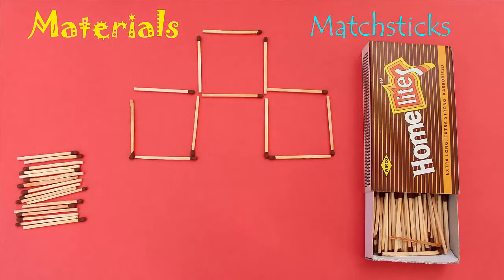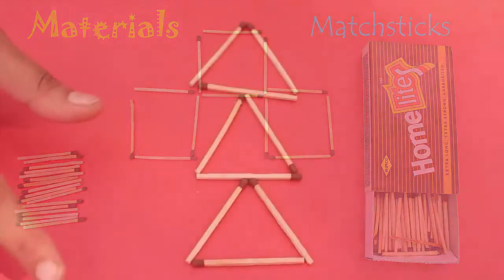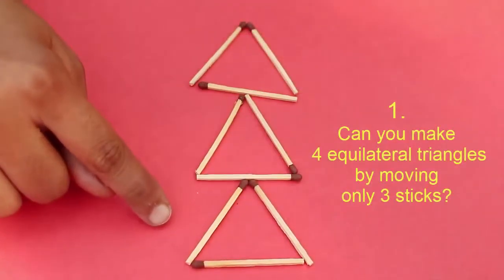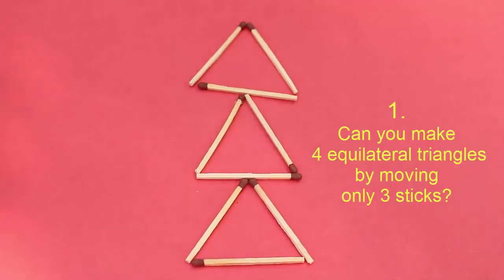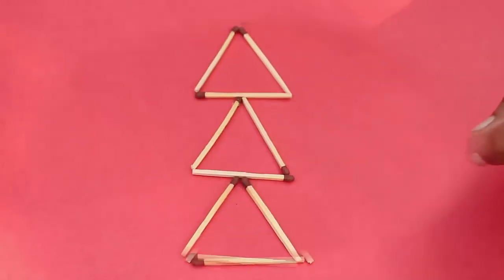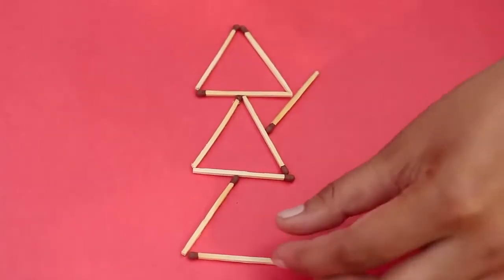In this puzzle, you would see that there are three equilateral triangles made from nine matchsticks. By moving just three matchsticks, can you construct four equilateral triangles?